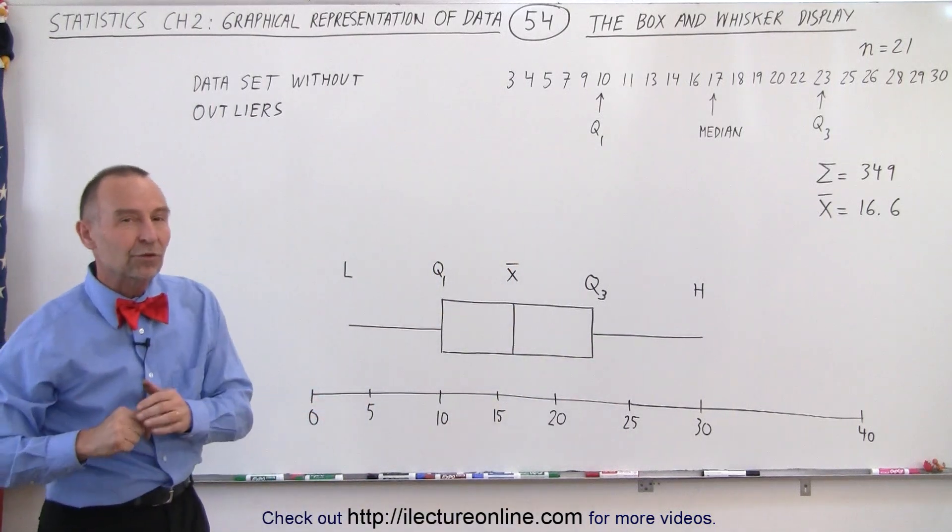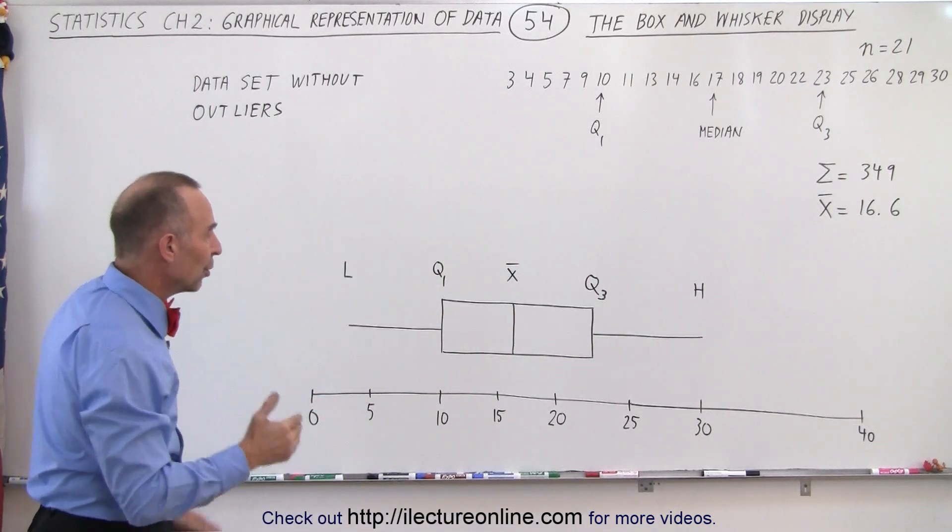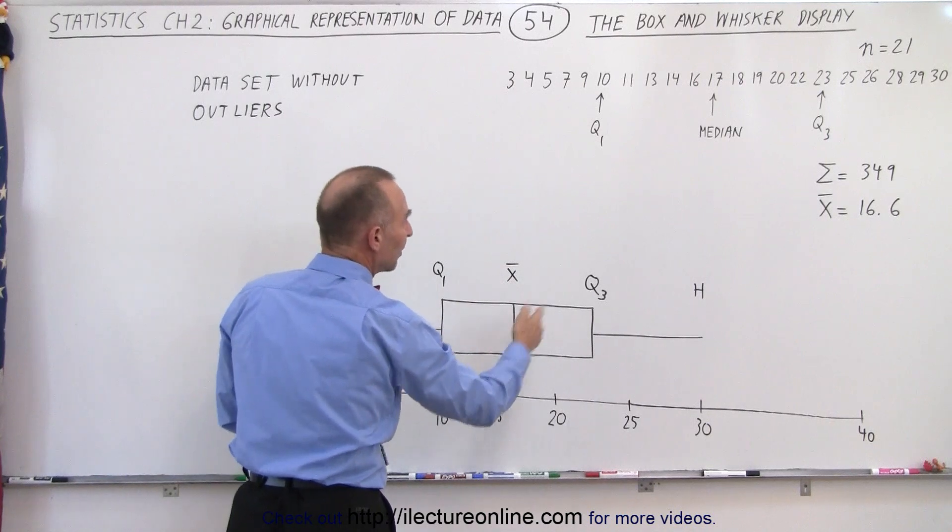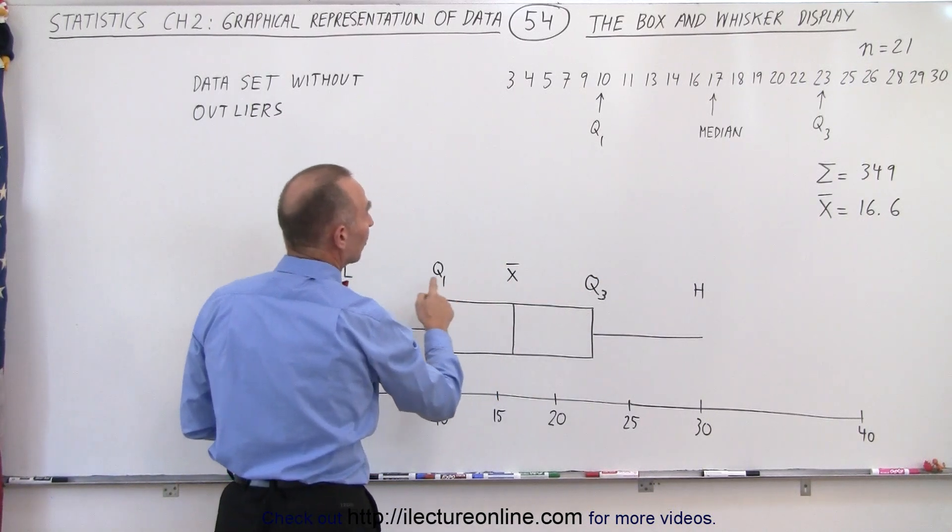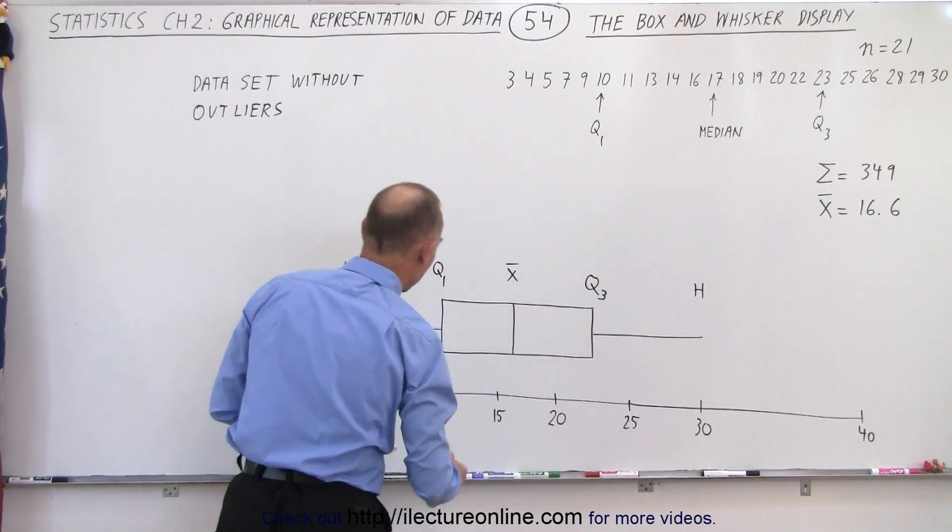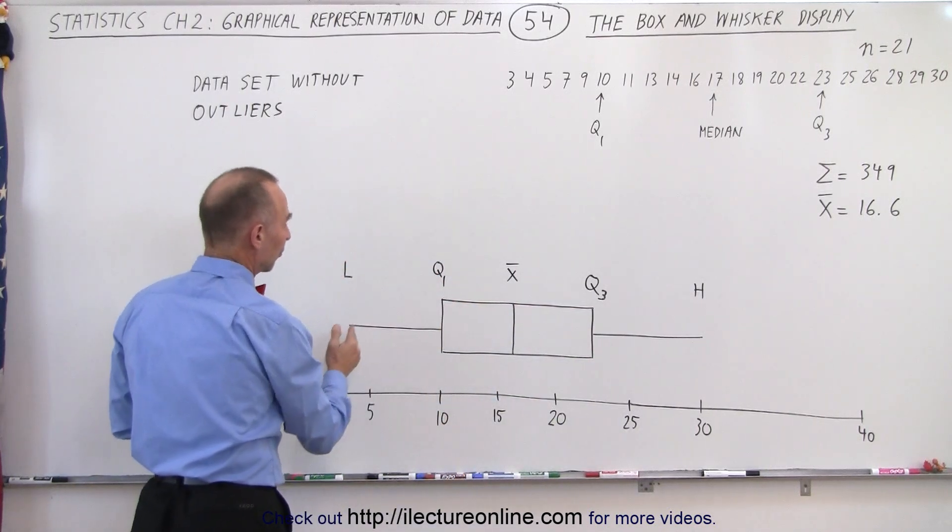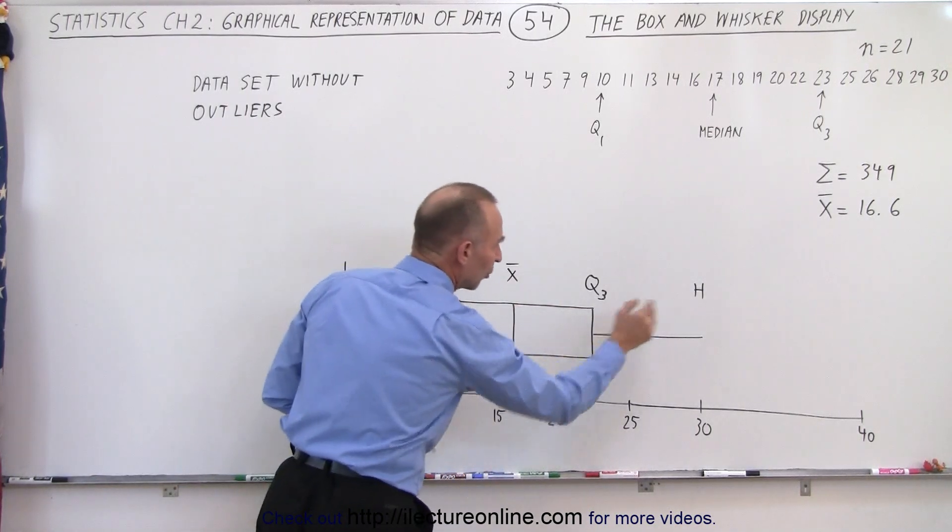So here we have the same data set that we used in the previous video, and so we know that the median ended up being 16.6. The first and the third quartile were 10 and 23, and then the low and the high were starting at 3 for the low and 30 for the high.